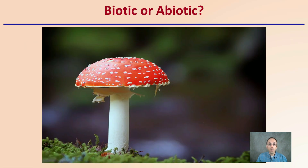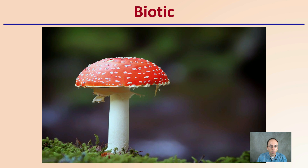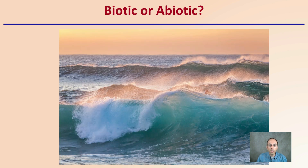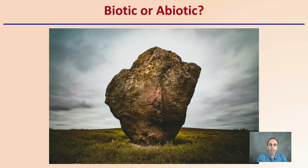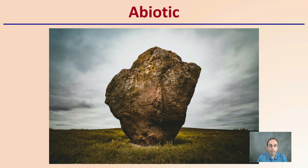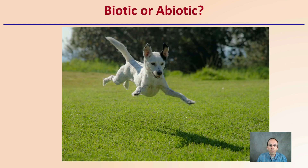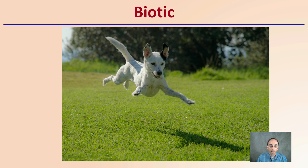Looking at this image, we're identifying whether items are biotic or abiotic. This mushroom here would be biotic. How about the waves of the ocean? Hopefully you said abiotic. And this rock in the foreground — rocks and minerals would go on the abiotic side. This wonderful dog caught in mid-jump would, of course, be biotic.